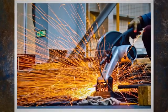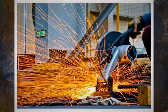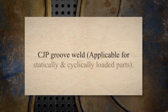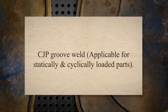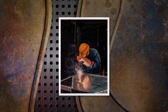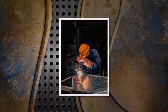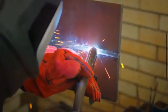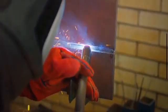Type 1: CJP groove weld applicable for statically and cyclically loaded parts. Type 2: CJP groove weld applicable for tubular parts. Type 1 complete joint penetration welds are made by welding from both sides.